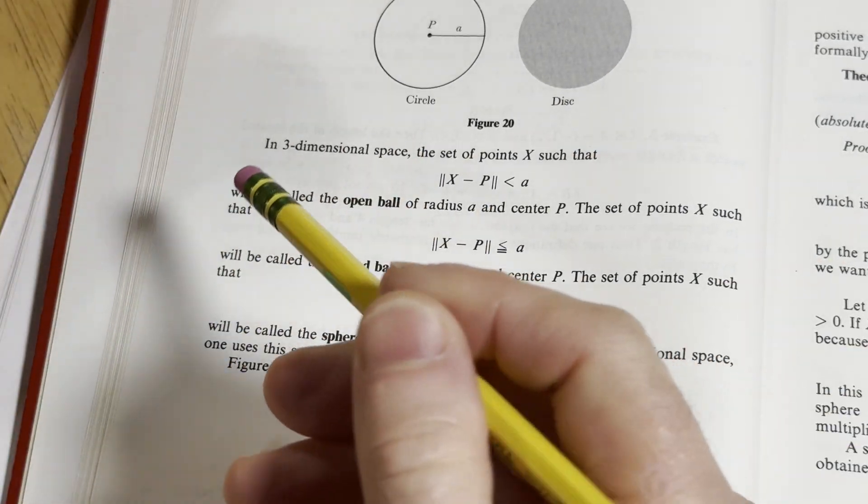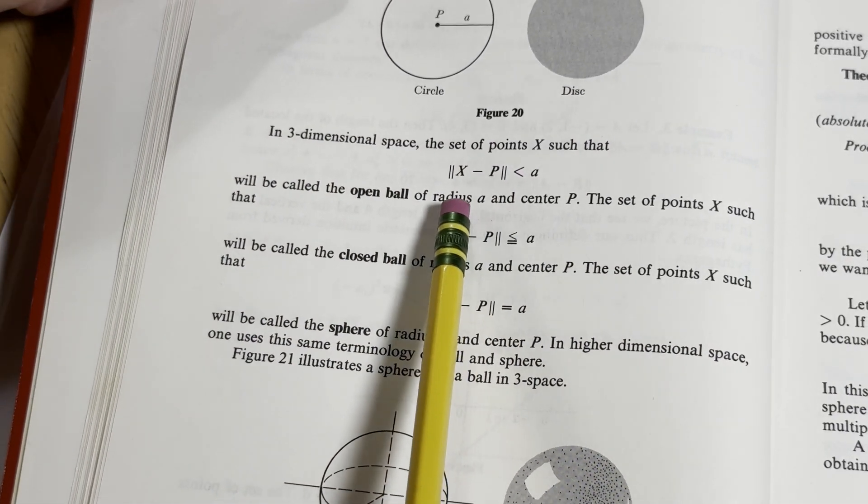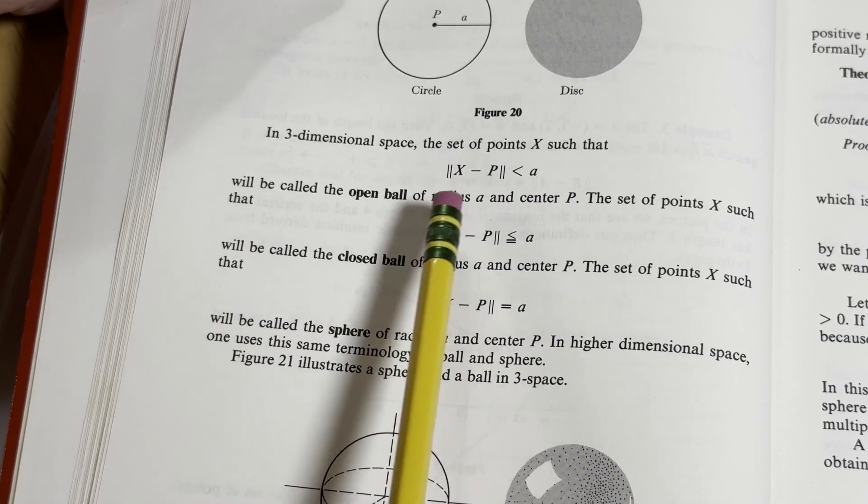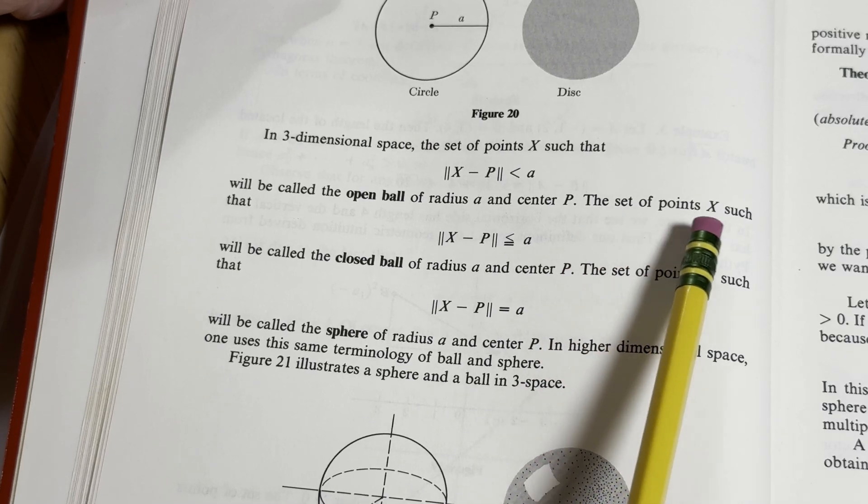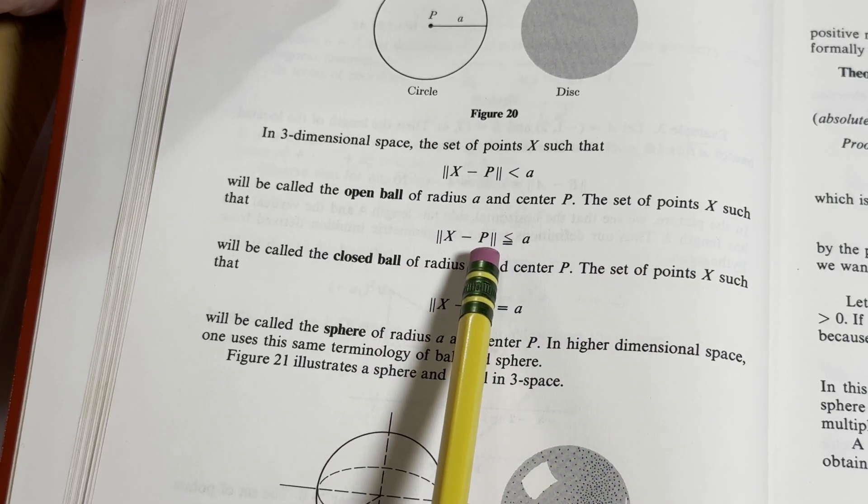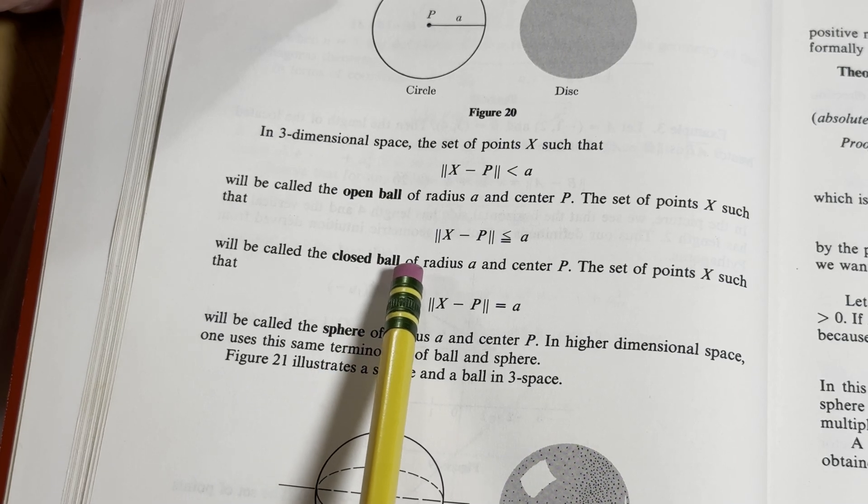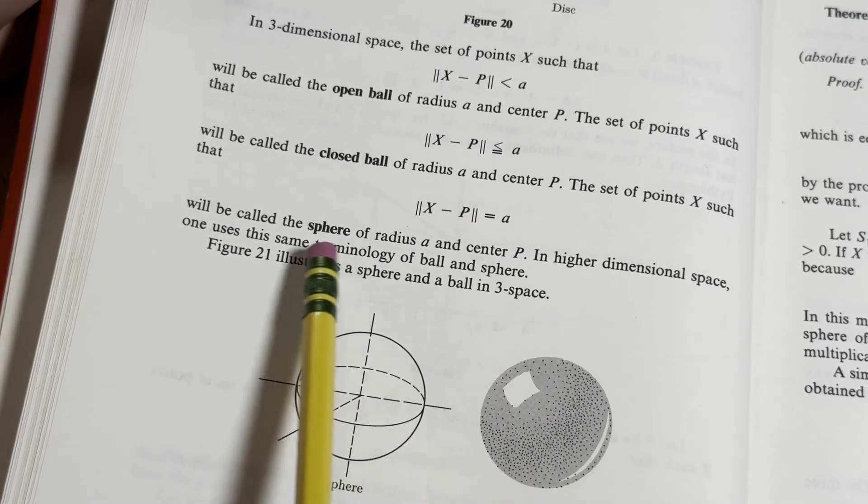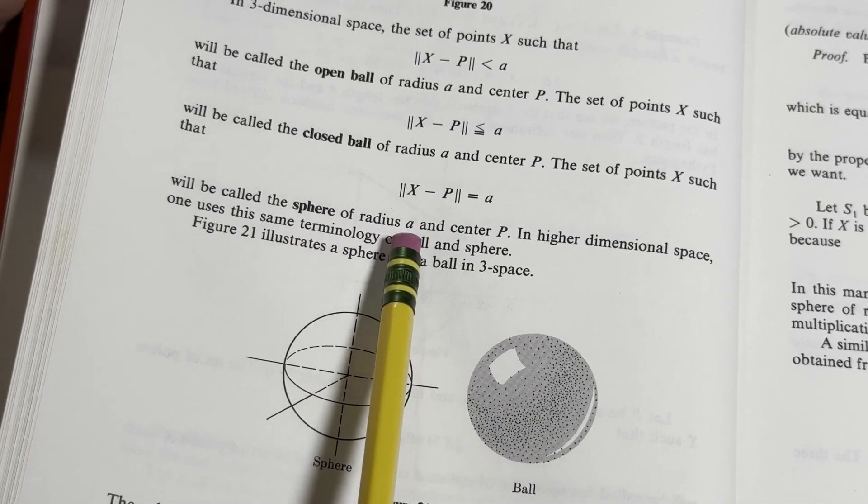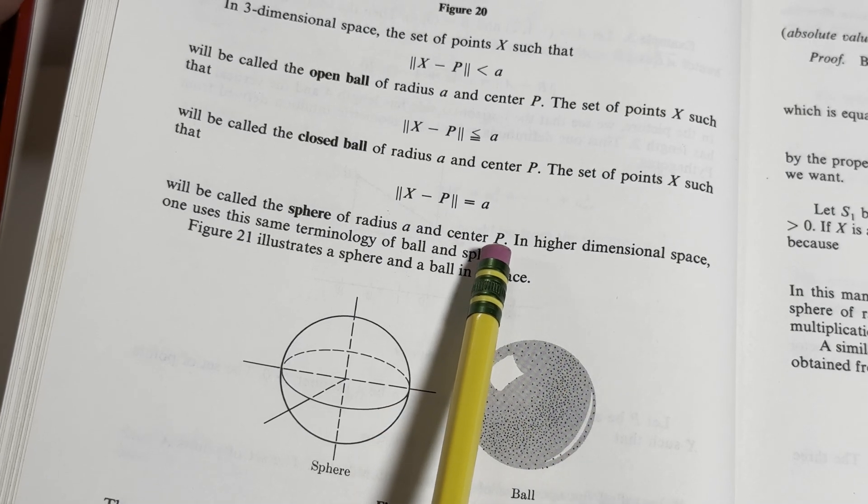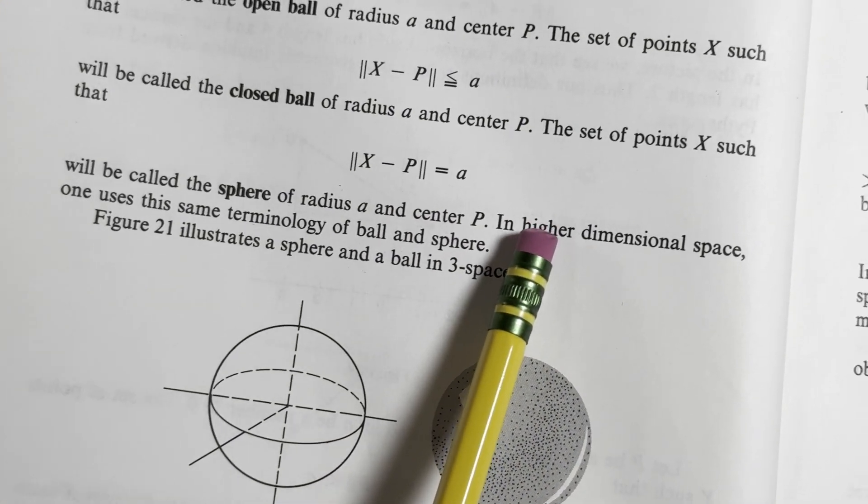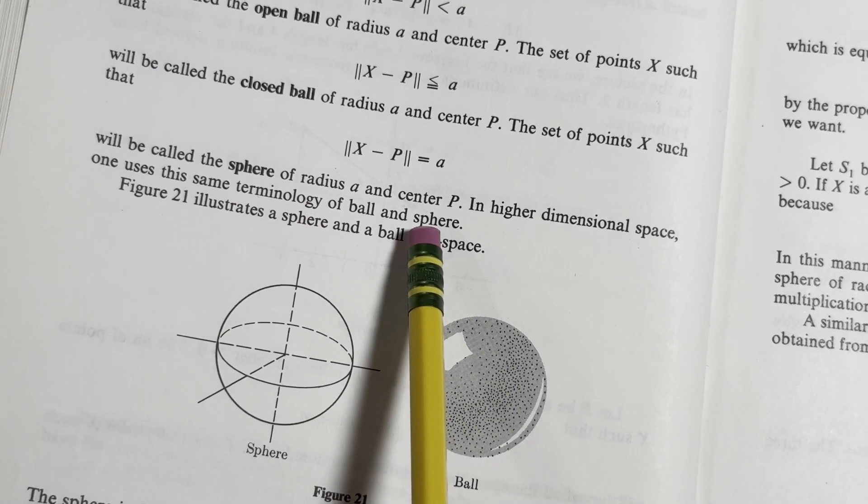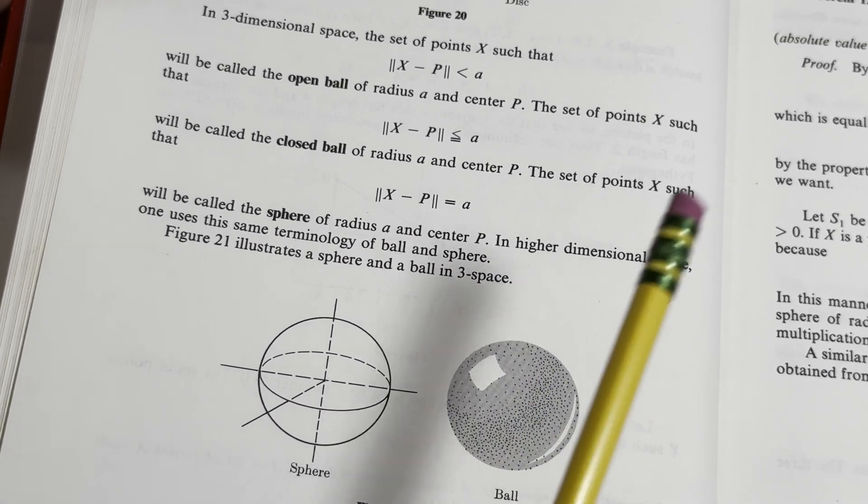So he says next that in three dimensional space, the set of points x such that the distance between x and p is less than a is called the open ball of radius a and center p. And the set of points x such that the distance between x and p is less than or equal to a is called the closed ball of radius a and center p. And then the set of points x such that the distance between x and p is equal to a we call the sphere of radius a and center p. So that is a key difference there. And this is really key here. In higher dimensional space, one uses the same terminology of ball and sphere. So that is very important and is something that needs to be mentioned. So I feel like this is the kind of thing that people need to know.